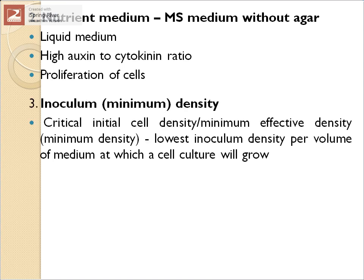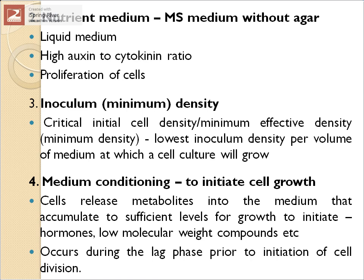An important aspect is maintaining a critical initial cell density, also called minimum effective density. If fewer cells than this threshold are placed in the medium, the cell culture will not grow. This is the lowest inoculum density per unit of medium at which a cell culture can grow.